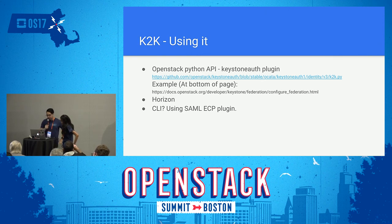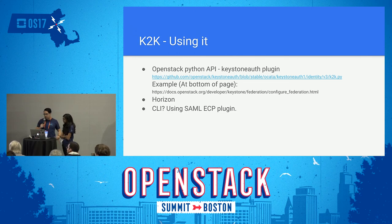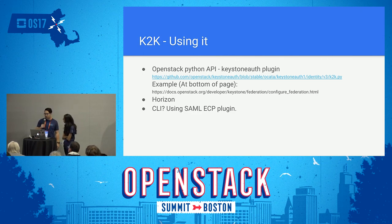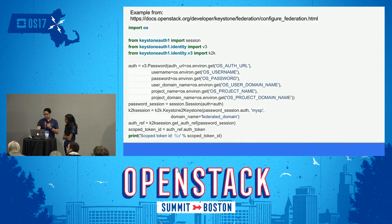To use it, you can use a Keystone auth plugin — there's a sample on the next slide — or you can use Horizon. For Horizon, as long as you register the service providers on the Keystone, Horizon should dynamically retrieve them and display them. You can also use a CLI; there should be a SAML ECP plugin for the OpenStack CLI, though that hasn't been fully confirmed.